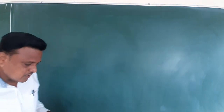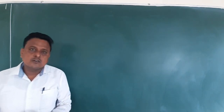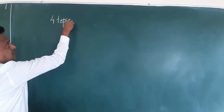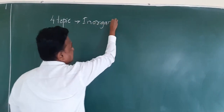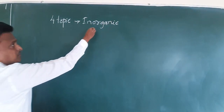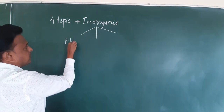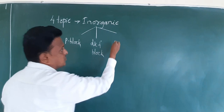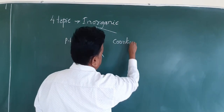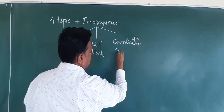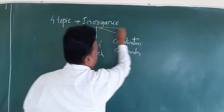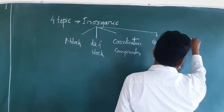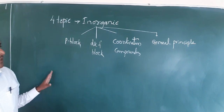Hello everyone. Today we continue the next units of chemistry used in second year. We have four topics that come under inorganic chemistry. The first is P block, next is D and F block, coordination compounds, and general principles. These are the four appointed topics in our NCERT.